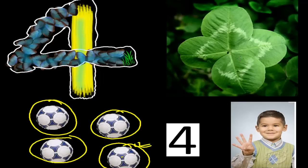And here in this figure, see how many leaves there are. 1 leaf, 2nd leaf, 3rd leaf, and 4th leaf — it means there are 4 leaves. And this boy is showing how many fingers? 1 finger, 2 fingers, 3rd one and 4th one. He is showing his 4 fingers.